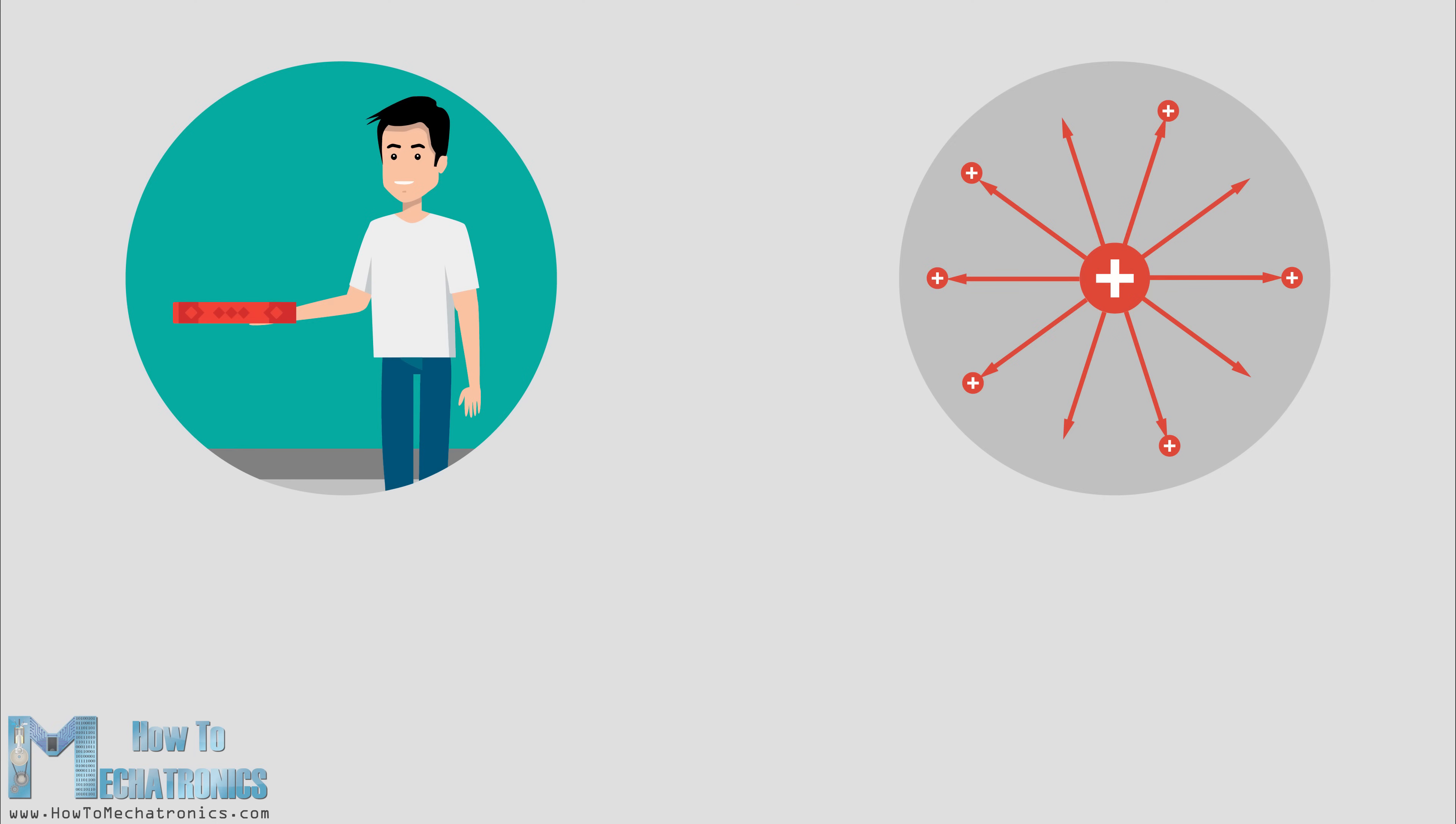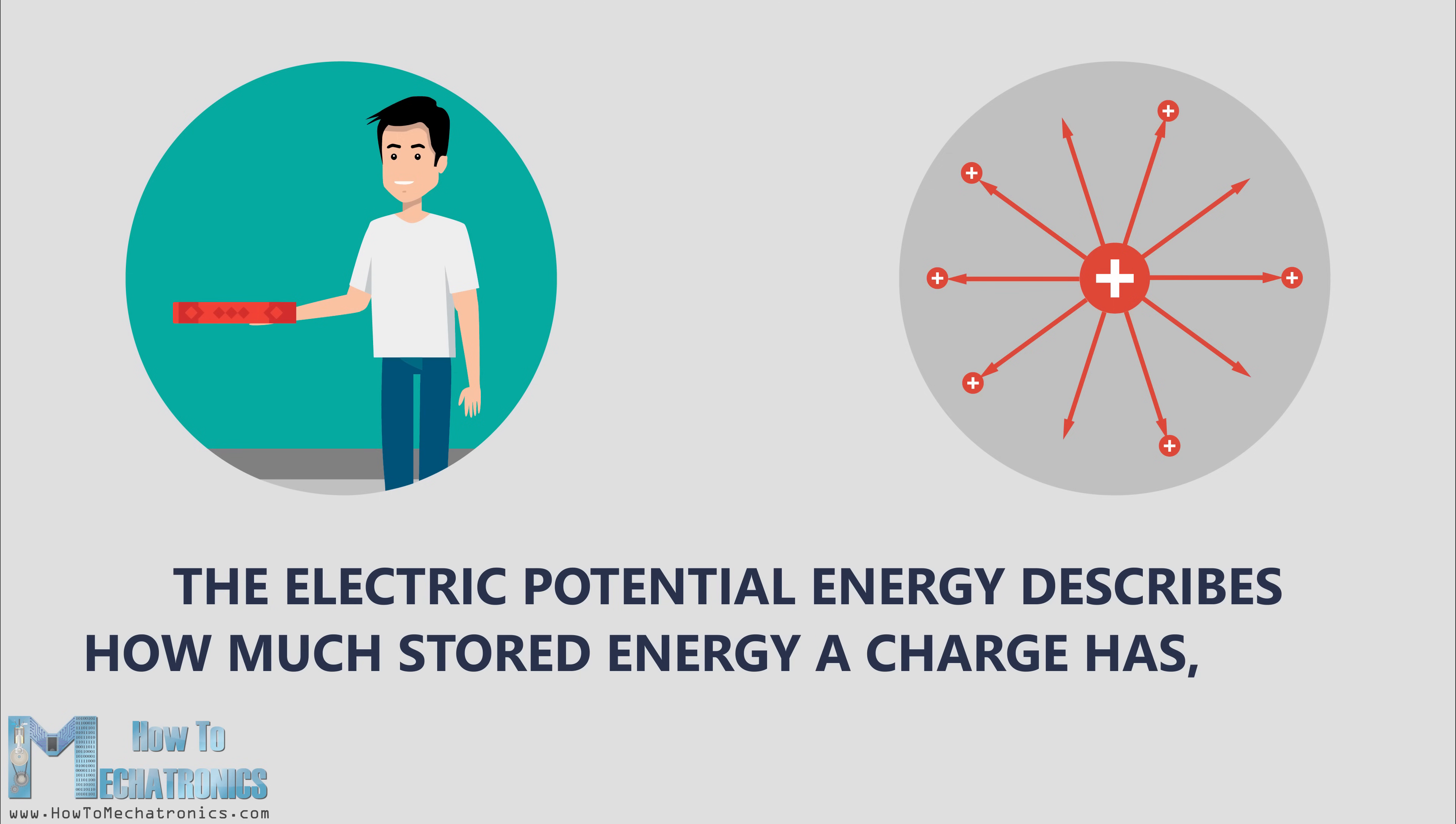We also have conservative forces when we are looking at charges. In gravitational field, we have a mass that has gravitational potential energy, and on the other side, in an electric field, we have charges that have electric potential energy. The electric potential energy describes how much stored energy a charge has when moved by an electrostatic force.